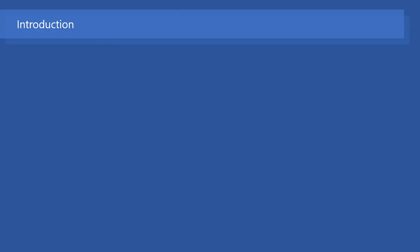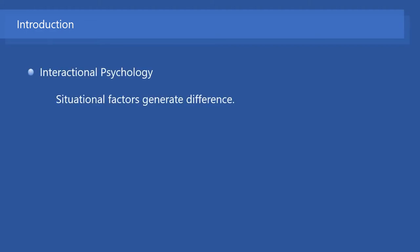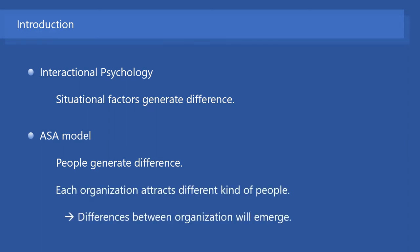Some perspectives explain the difference between organizations. Perspectives such as Interactional Psychology argue that situational factors generate differences between organizations. On the other hand, the ASA model takes a person-centered view. The ASA model proposes that differences between organizations derive from the differences between their people. Specifically, each organization will attract different kinds of people, so the differences between organizations will emerge.